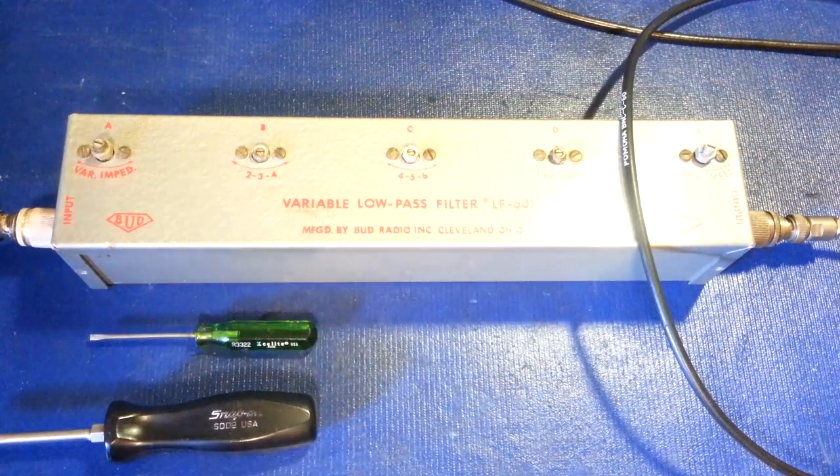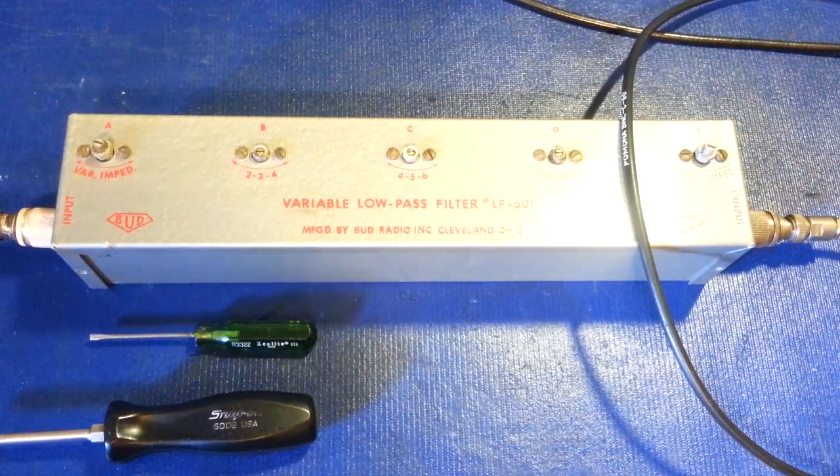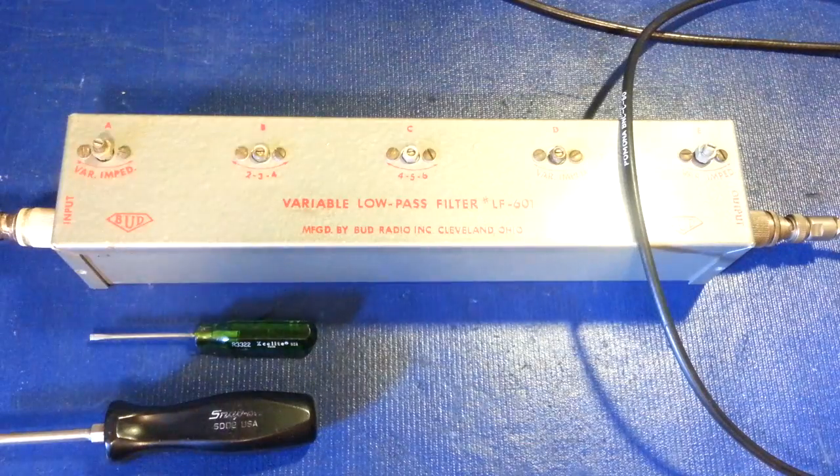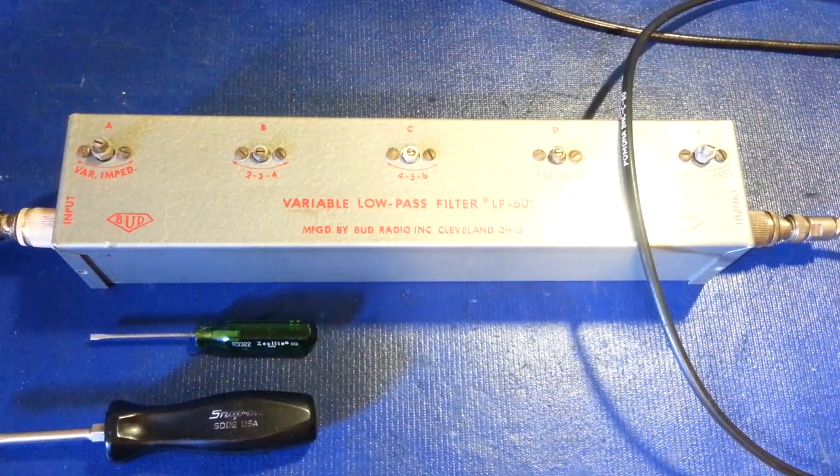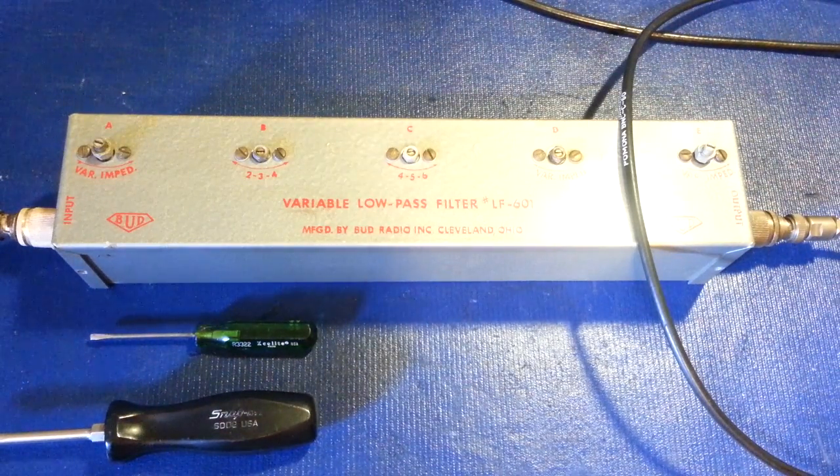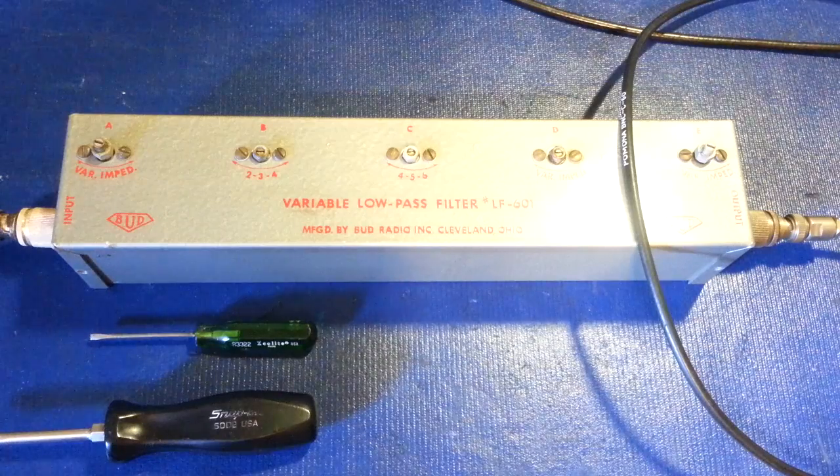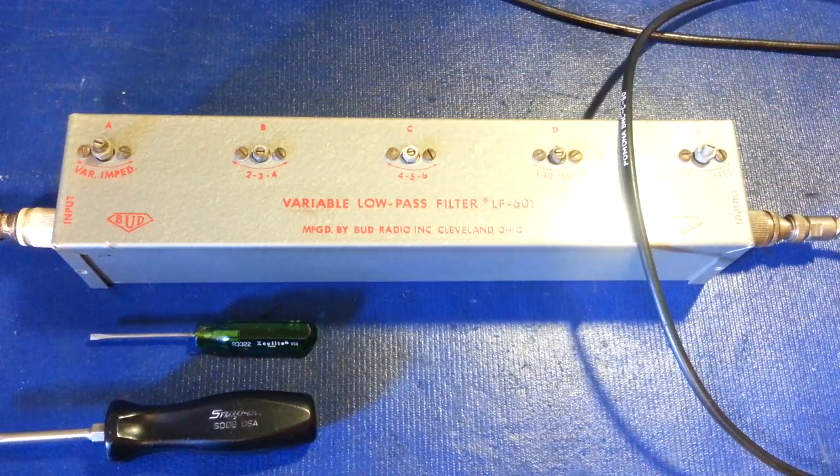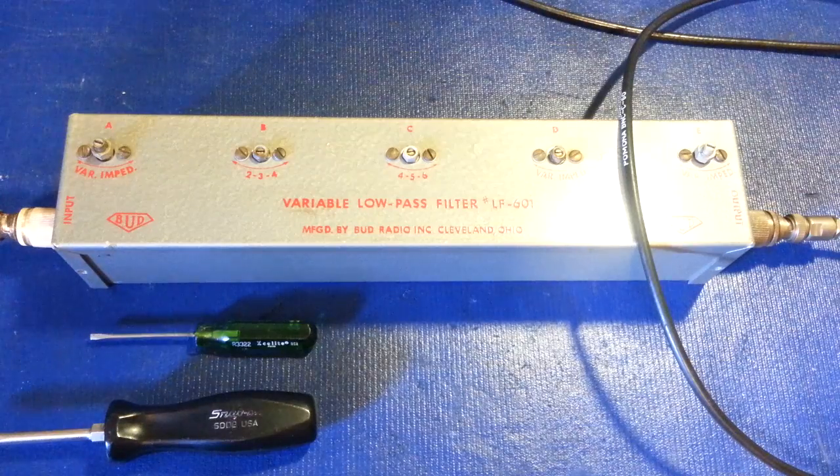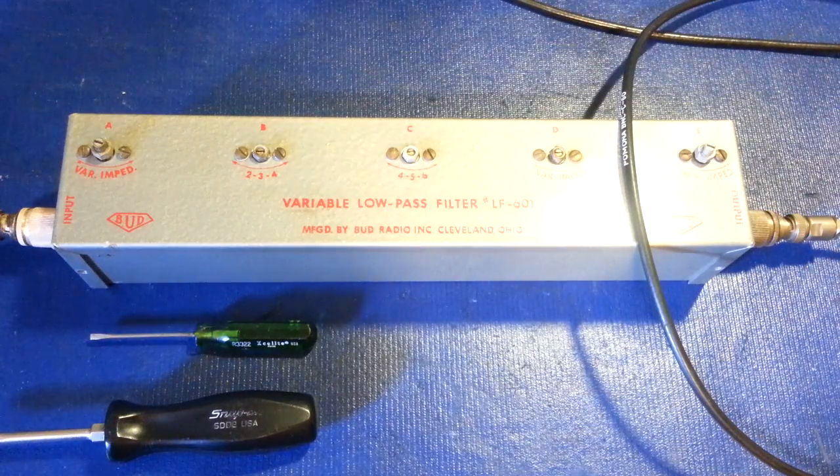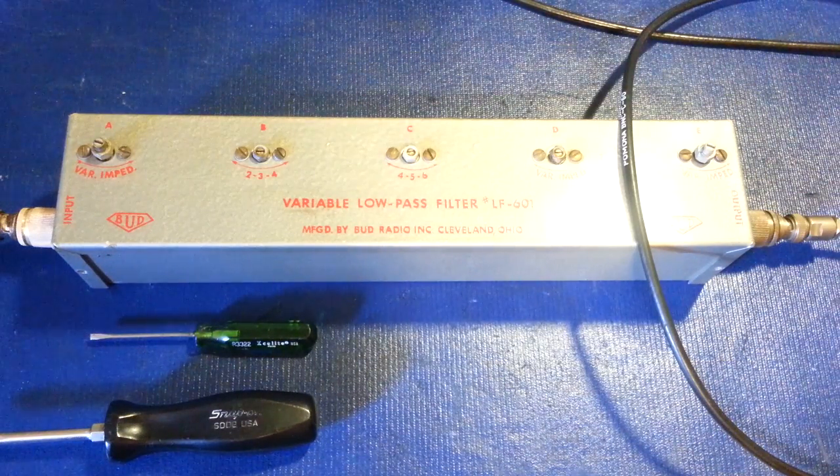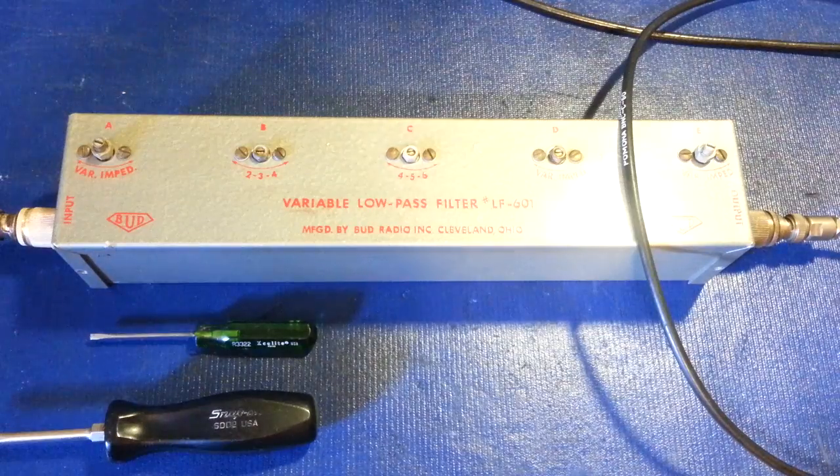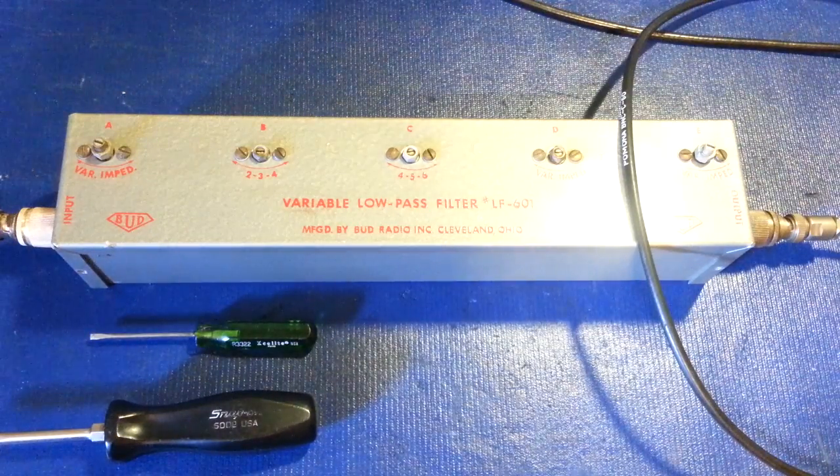Okay, today on the bench we have a device that was given to me. I wanted to see how well this thing worked. What we have is a Bud Radio Incorporated Model LF-601 variable low-pass filter. What makes this kind of unique and also expensive by today's standards if it was made is the variable part.